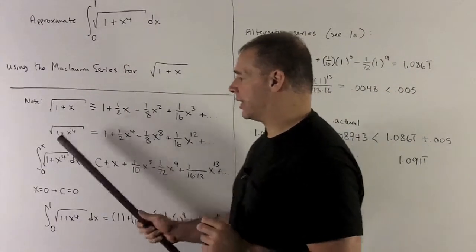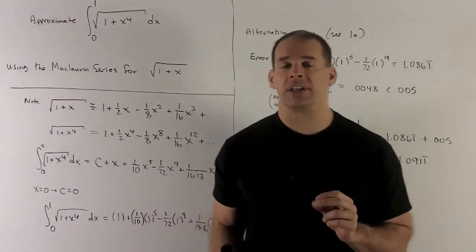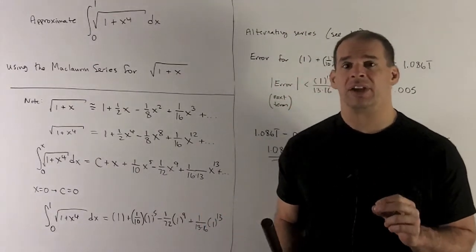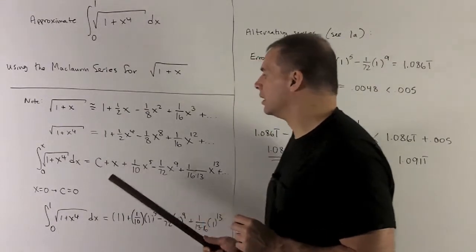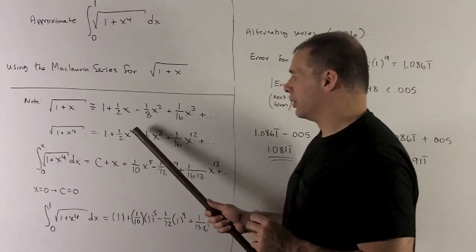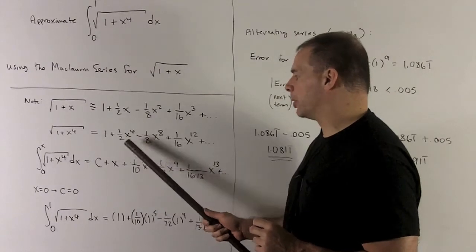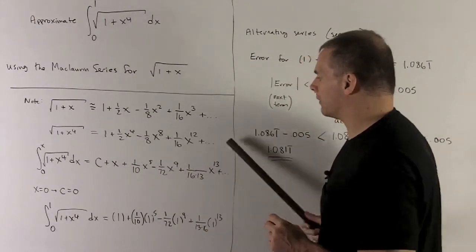Now, I'm going to take the anti-derivative. So for a power series, the way I take the anti-derivative is just going to be term by term. So what do we do? We add a constant, the 1 goes to an x, we're going to add 1 to the 4, get a 5, flip it over, gives me a 10th, and so on for the rest.